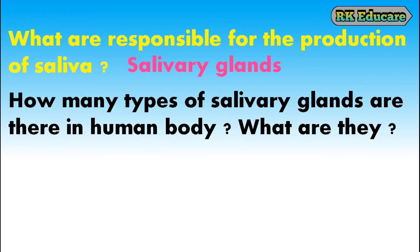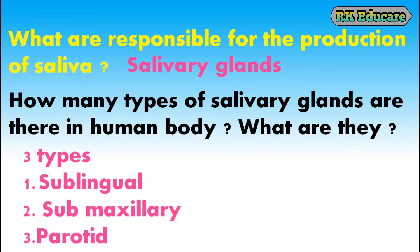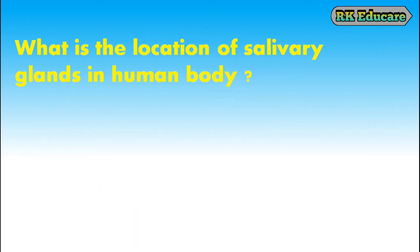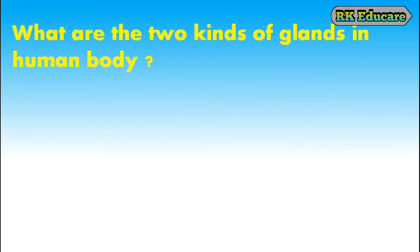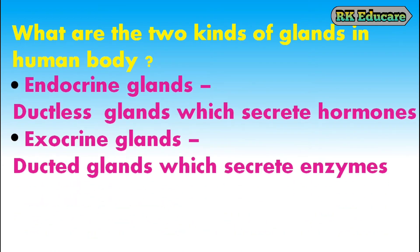How many types of salivary glands are there in the human body? There are three types of salivary glands in the human body: sublingual, submaxillary and parotid glands. Two pairs are located at the side of the jaw and one pair is below the tongue. What are the two kinds of glands in the human body? Endocrine glands and exocrine glands. Endocrine glands are ductless glands which secrete hormones directly into blood. Exocrine glands are ducted glands which secrete enzymes.